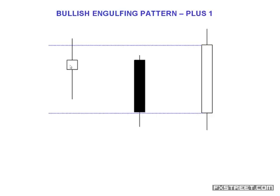It does not matter if the plus-one bar is an up day or a down day — it could just as easily be a dark body. And lastly, the more engulfing patterns you have — plus one, plus two, plus three, even plus eight or plus ten — the higher the probability it will extend in that direction. So we're not just looking for plus one; I'll show you examples of bullish engulfing patterns plus eight along the way.